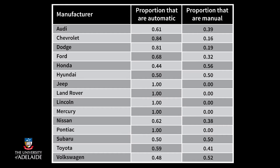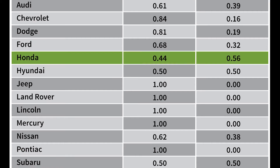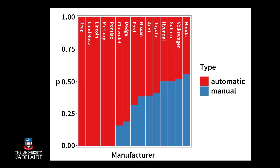So which manufacturer has the highest proportion of cars that are manuals? Yes, Honda with 56%. Let's visualize this with a bar chart.